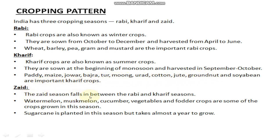Third, Zaid crops — the season between Rabi and Kharif. Mostly vegetables are grown in this season. Examples include watermelon and muskmelon. Sugarcane is also planted in this season, though sugarcane takes a full year to grow. This concludes Lecture 1 of Chapter 4: Agriculture. Stay tuned for Lecture 2.